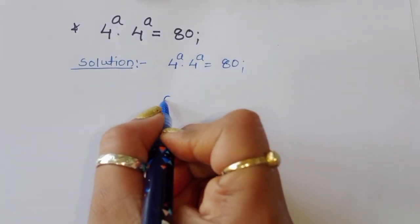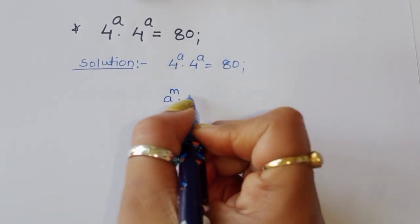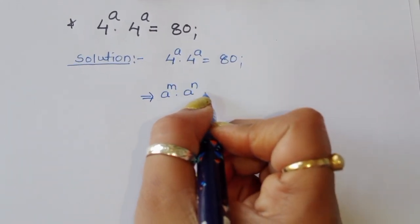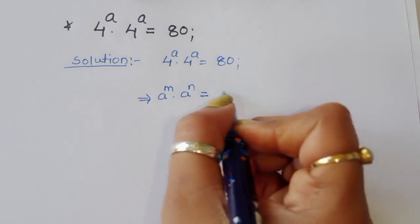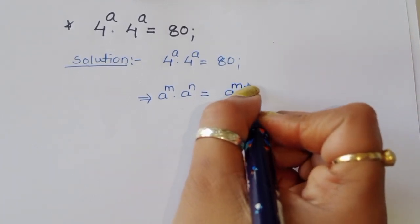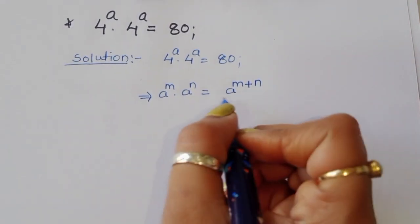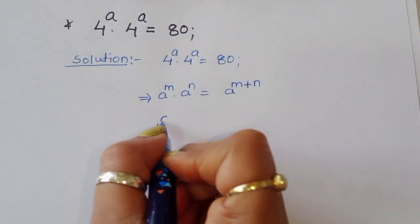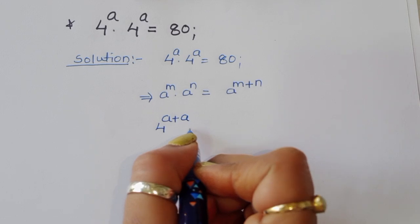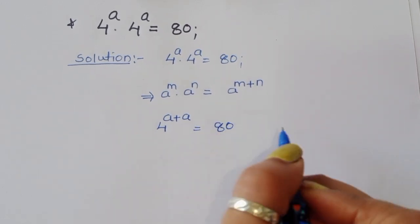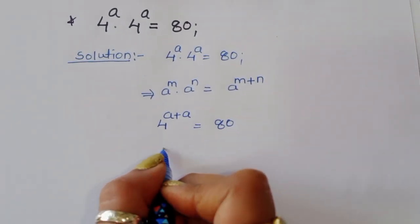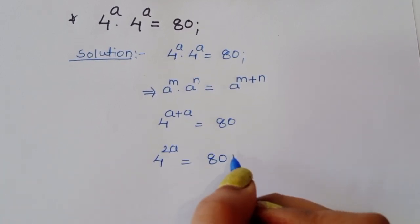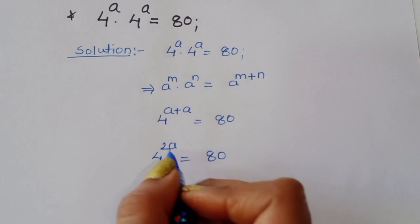The formula is: a power m times a power n is equal to a power m plus n. Using this formula here, we will get 4 power a plus a is equal to 80, so 4 power 2a is equal to 80.